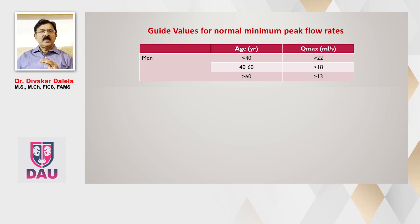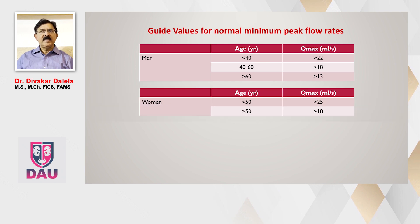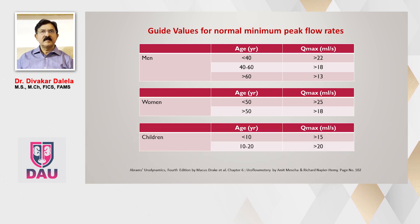Younger people tend to have a higher Q-max compared to middle-aged and elderly people, as you can see here. In women, younger women will have a higher Q-max and elderly women a lower Q-max as acceptable normal. In children, those below 10 years have a different Q-max, and children between 10 to 20 years have a different Q-max as well.